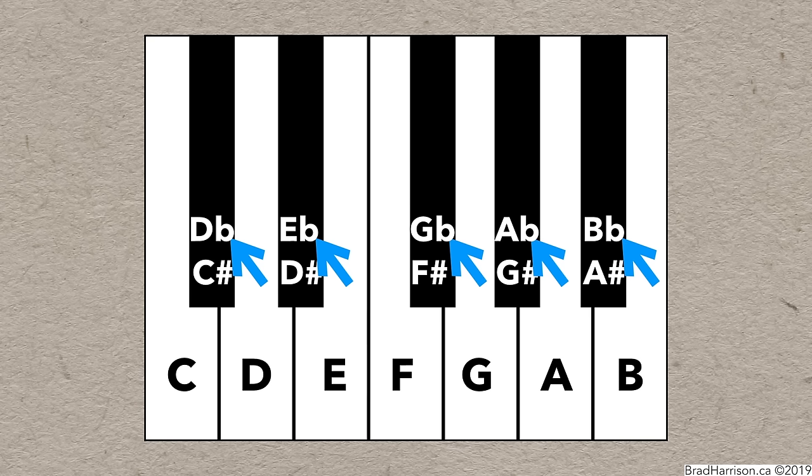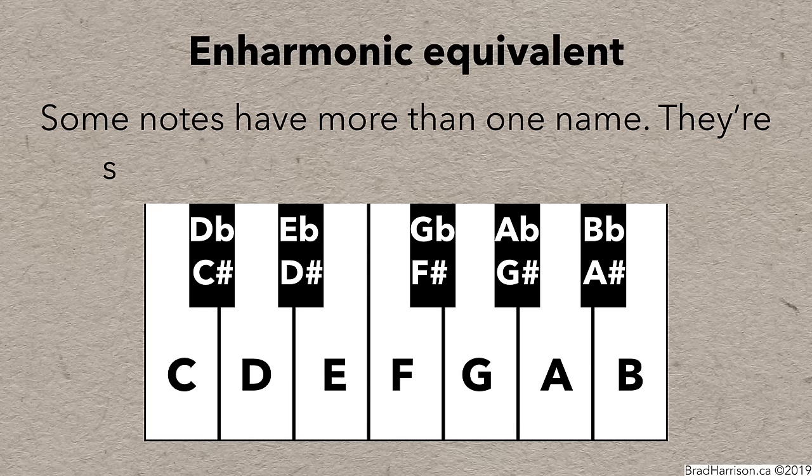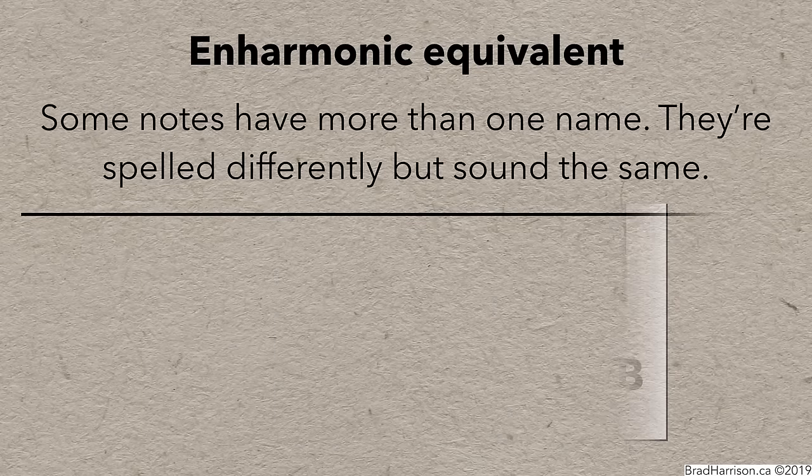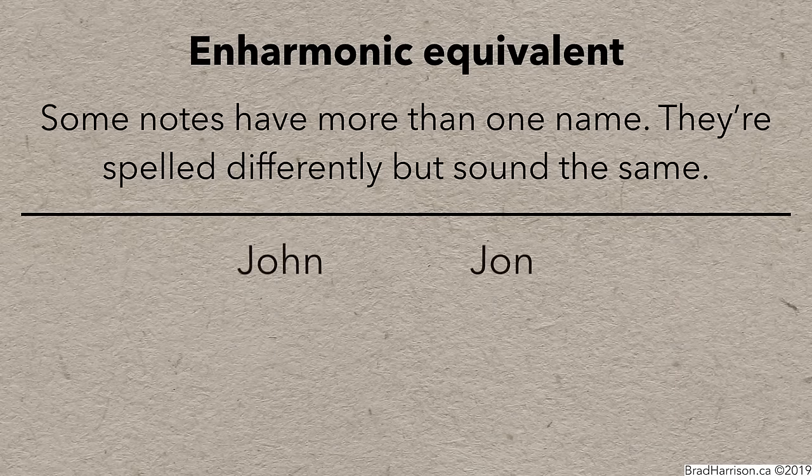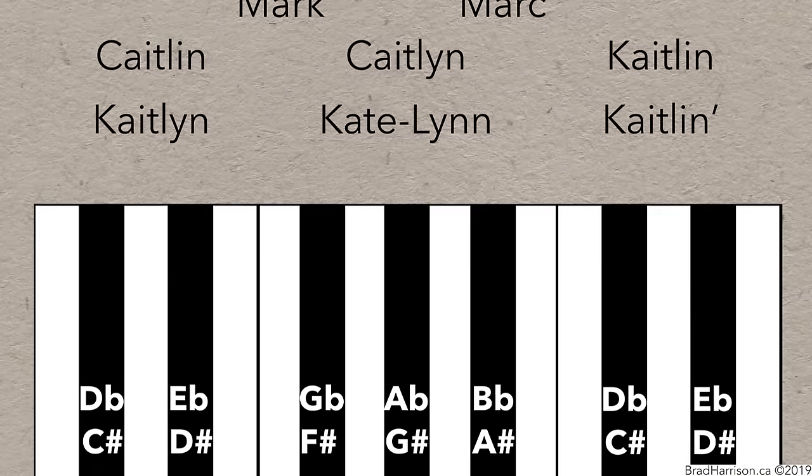You'll notice that the black notes have two names because you can approach them from below or above. That phenomenon is known as enharmonic equivalent, which refers to the fact that some notes have more than one name. They're spelled differently, but sound the same. It's kind of like how some names have more than one spelling, like John, Mark, or Caitlin.